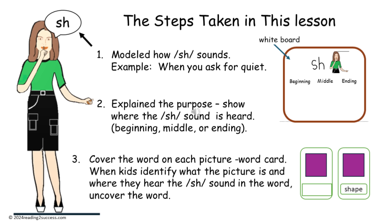The steps taken in this lesson: Number one, model how SH sounds using the example when you ask for quiet. Number two, explain the purpose of the lesson — show where the SH sound is heard in the beginning, middle, or ending of a word. And number three, cover the word on each picture word card. When kids identify what the picture is and where they hear the SH sound in the word, uncover the word.